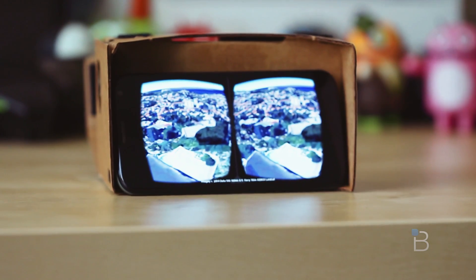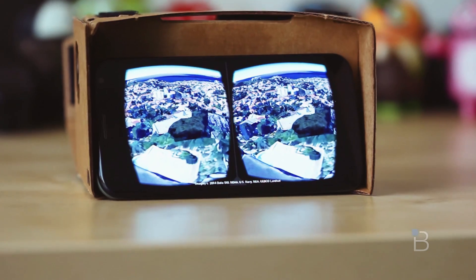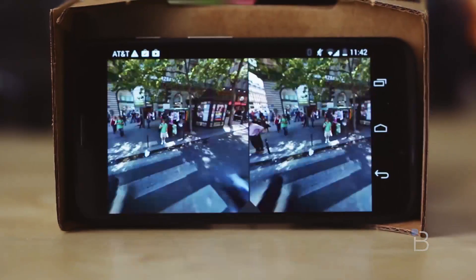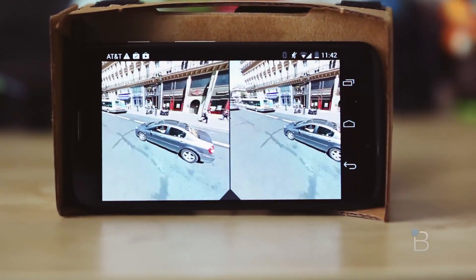These demos include Google Earth, which allows you to see Earth from space or swoop down into certain cities. And there's also Street View, where you can drive through famous cities around the world.